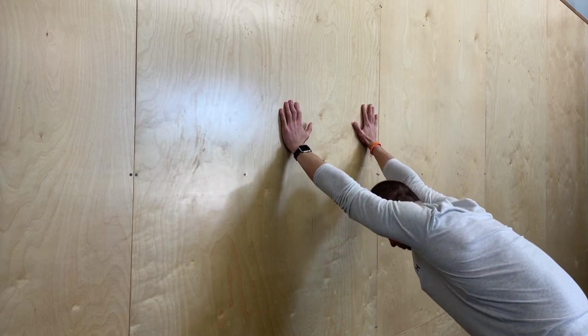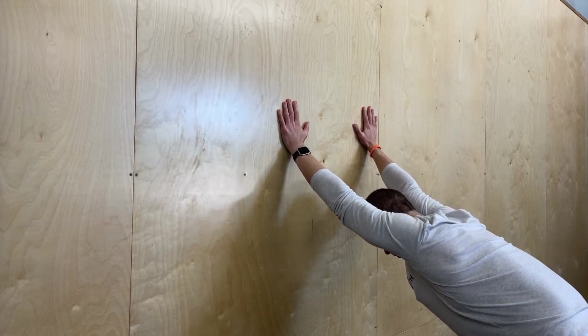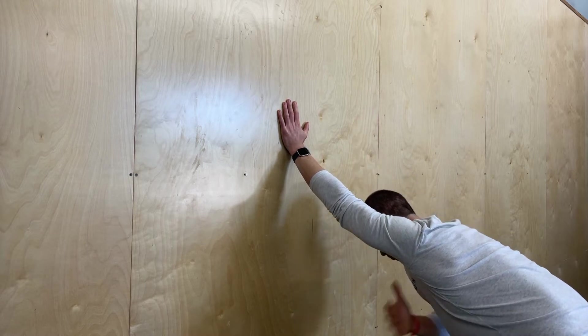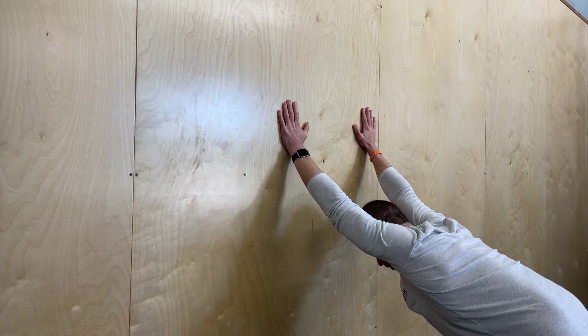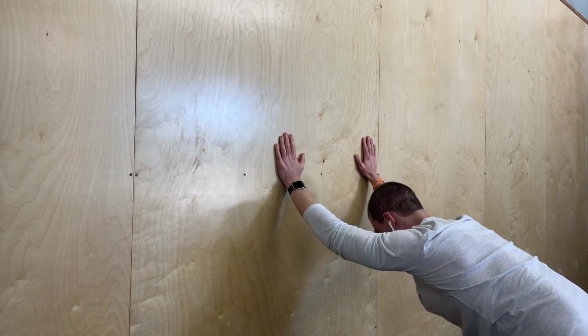Hang out here for about a minute and a half, stretching out the shoulder to the armpit, just relaxing. At the end of that two minutes, you're going to begin pulling down on that wall.